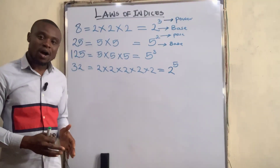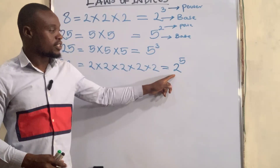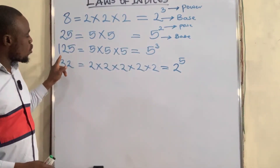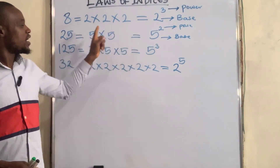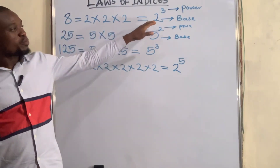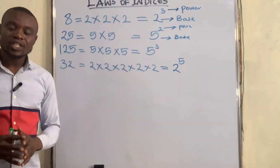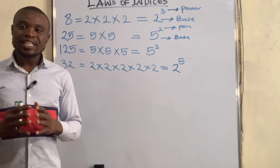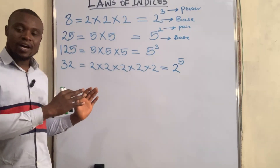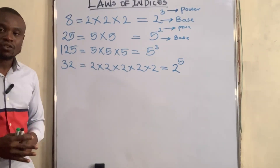So two to the power of five is the index form of 32. Five to the power of three is the index form of 125. Five to the power of two is the index form of 25, and two to the power of three is the index form of eight. The laws of indices have a lot to do with numbers in index form, so that's why I'm explaining this first.